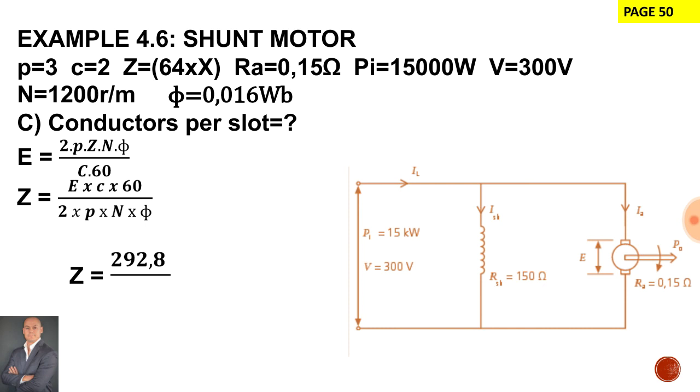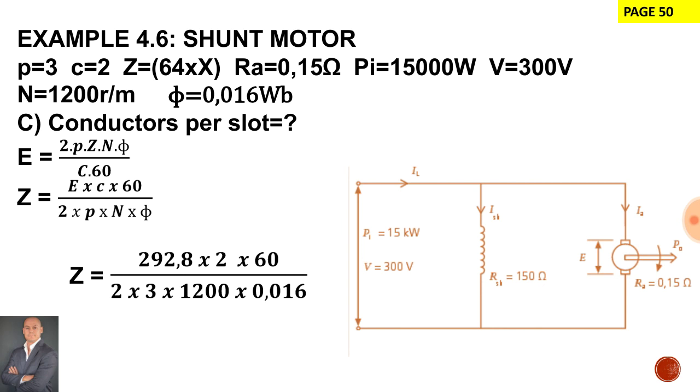The generated emf is 292.8 volts. The number of parallel paths is 2 multiplied by 60 over our constant of 2. The pole pairs is 3. The speed is 1200 revs per minute and the flux per pole is 0.016 weber. Therefore the total number of armature conductors is 305.